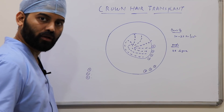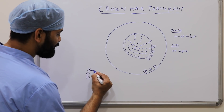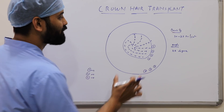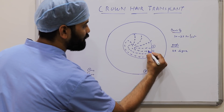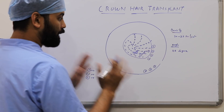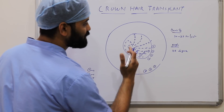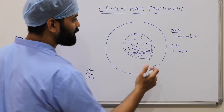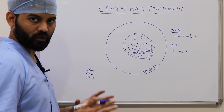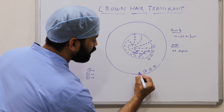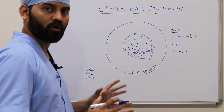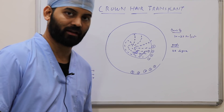While implanting the grafts in the crown area, we first segregate them into singles, doubles, and triples. Single grafts are always placed in the central area just next to the whorl or the center of the whorl. Double grafts are implanted on the periphery adjacent to the single grafts in the next row to give a softer appearance. Triple grafts are always transplanted at the periphery so that the crown area doesn't look very coarse or artificial.